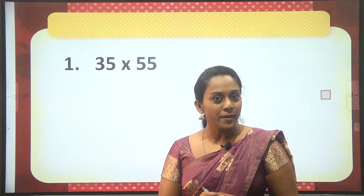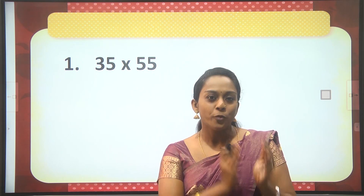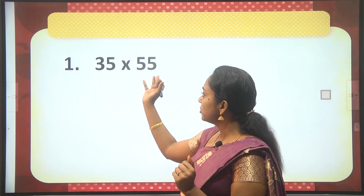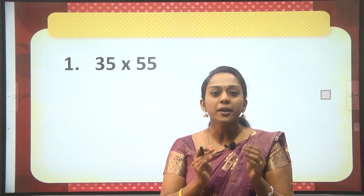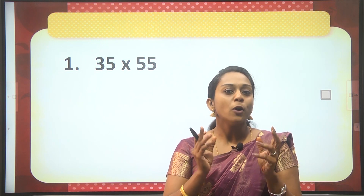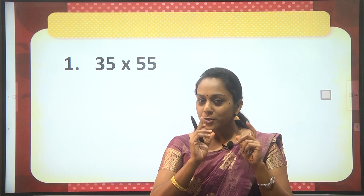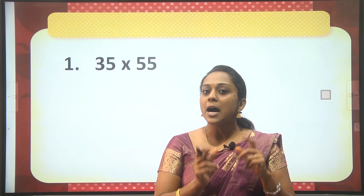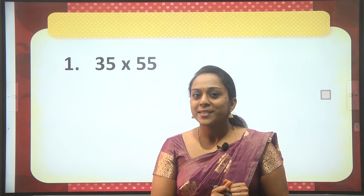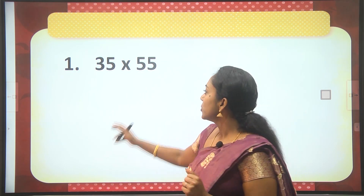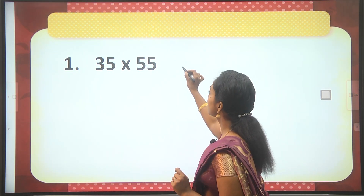Both numbers end in 5, so focus on the digit just before 5. Here the digits are 3 and 5 — both are odd numbers. The rule is: when both digits are odd, your product will always end in 25. Also keep in mind, when both digits are even, the product will also always end in 25.